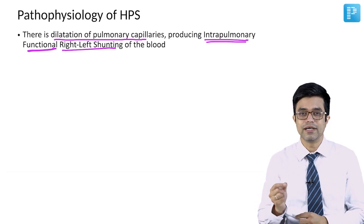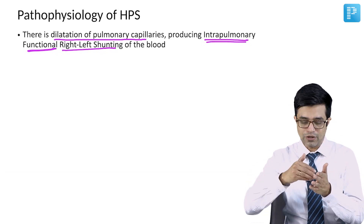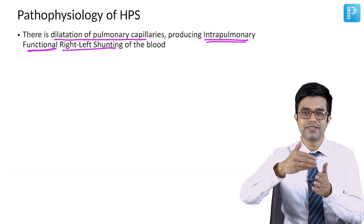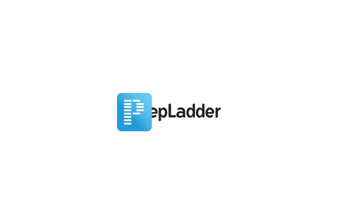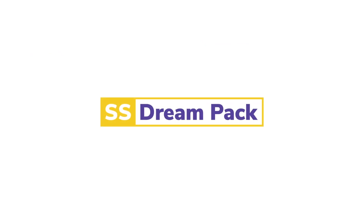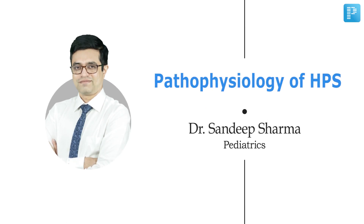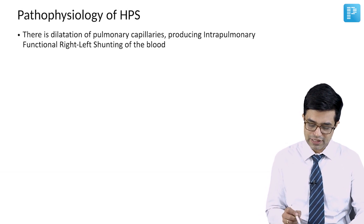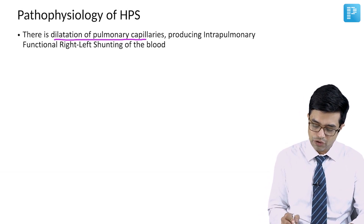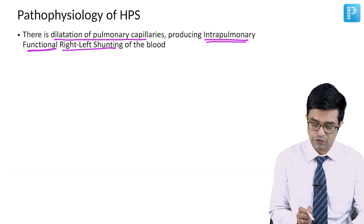It is important that the pulmonary capillary should be thin so that when the blood is moving fast, the oxygen should be easily able to traverse the entire diameter of the capillary and reach into the alveoli. The pathophysiology of HPS mainly involves dilatation of the pulmonary capillaries, which produces intrapulmonary — within the lung — right-to-left shunting functionally of the blood.